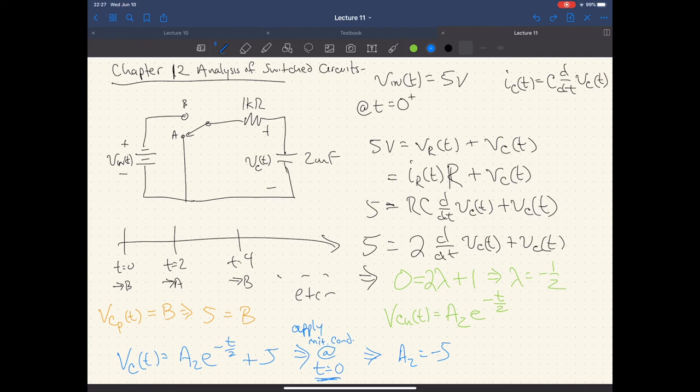So we end up with that, which gives us minus five e to the minus t over two plus five. Okay. So now I want to know what my behavior is. I've got this system defined here. Okay. I know what it's doing. I know what this graph looks like. It looks like this. It's this combination function. It starts at zero. I should write what this actually is. This is V_C(t).